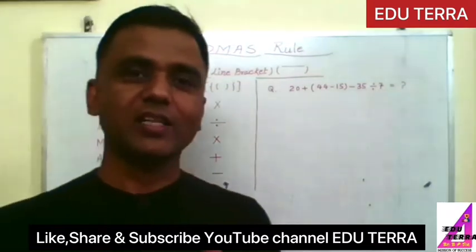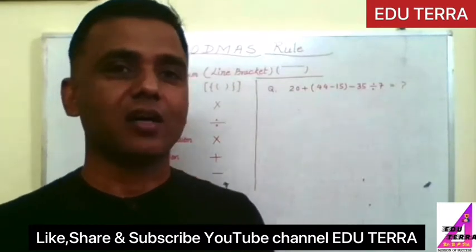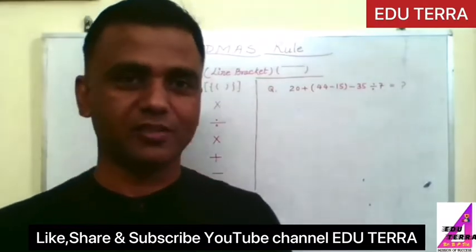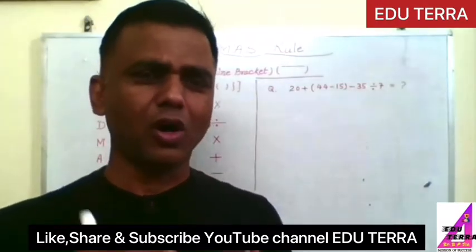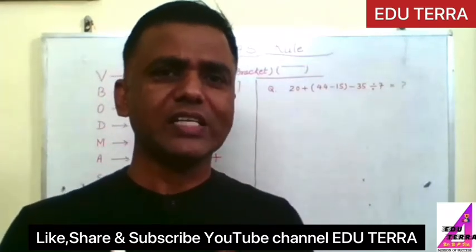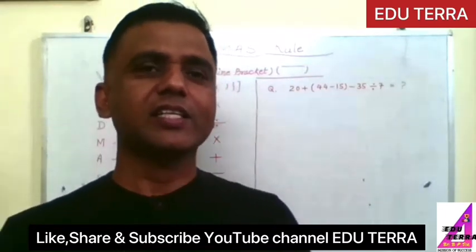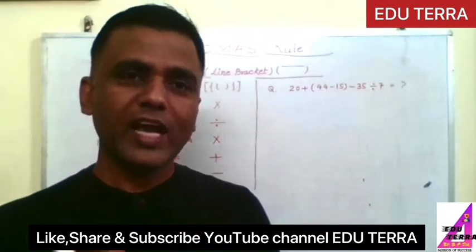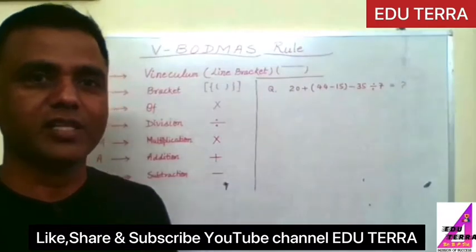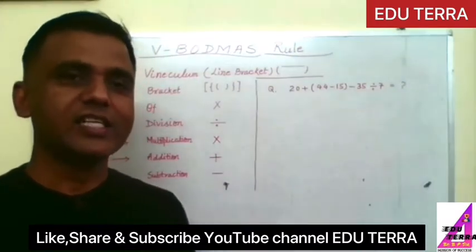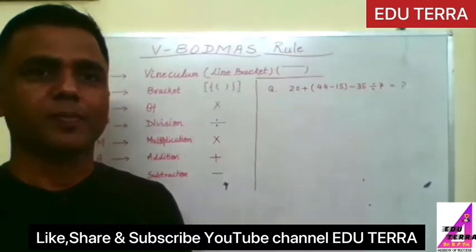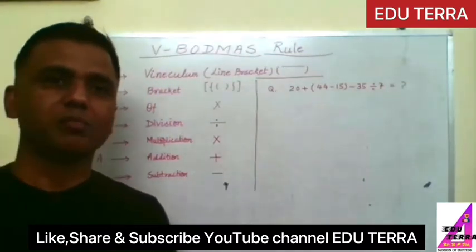O means of. In Hindi you can say it is ka, but in mathematical terms it is like multiplication. After that, D means division, simple division sign. Now M means multiplication, so multiplication means again it is a symbol of multiplication like cross.